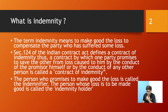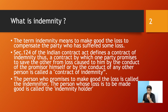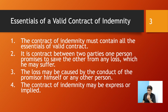Section 124 defines a contract of indemnity as: a contract by which one party promises to save the other from the loss caused to him by the conduct of the promisor himself or by the conduct of any other person. There are two parties: one is called the indemnifier and the other is called the indemnity holder. The person who promises to make good the loss is the indemnifier; the person whose loss is to be made good is the indemnity holder.